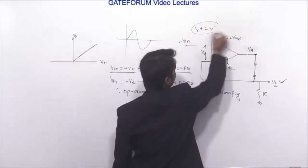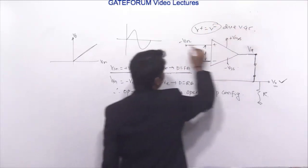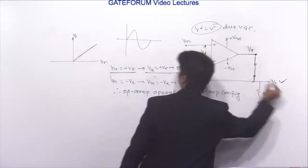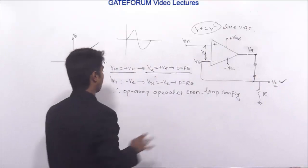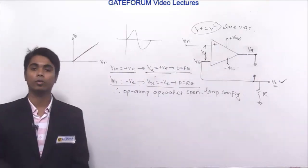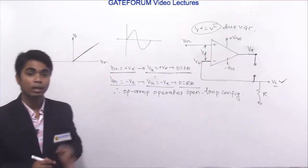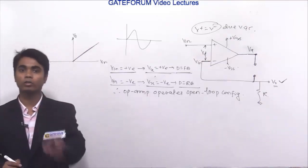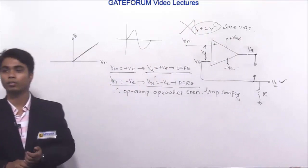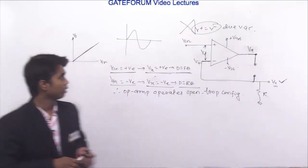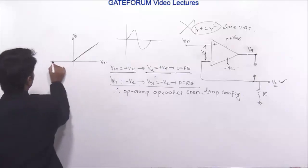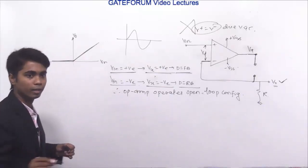When V_in is negative, Vx is negative, diode is reverse biased and open circuited. The op-amp operates in open loop configuration. In open loop, virtual ground concept cannot be applied — V_in does not appear at the inverting node. Therefore VO equals 0 for negative V_in. This means option A is the correct answer.